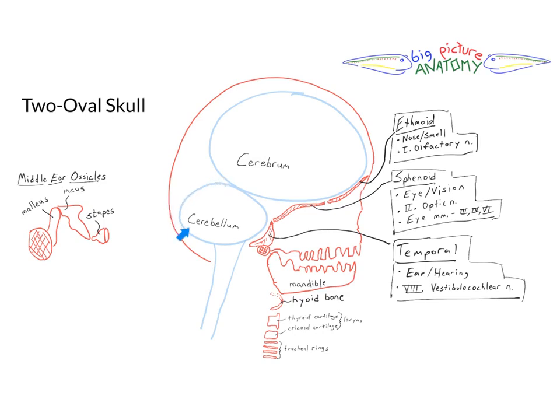And a smaller oval representing the cerebellum as seen from the side in sagittal view. We then add on to this the neurocranium, which are those flat plate-like bones that form the entire rounded dome-like part of your skull.